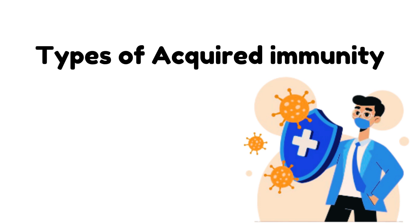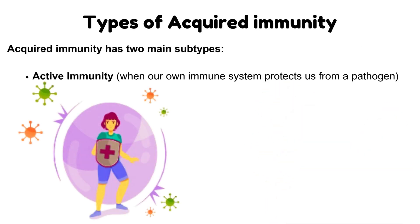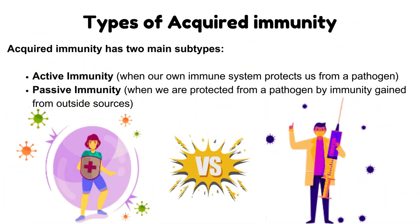Acquired Immunity has two main types. Active Immunity: when our own immune system protects us from a pathogen. Passive Immunity: when we are protected from a pathogen by immunity gained from outside sources. We will discuss them one by one.